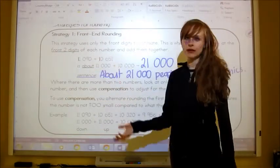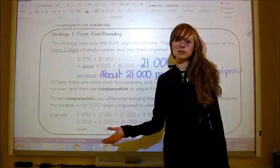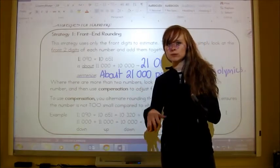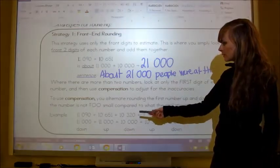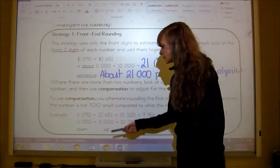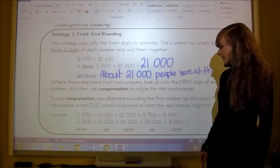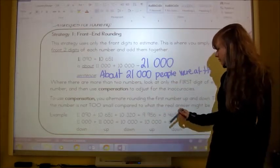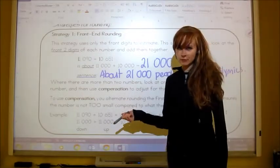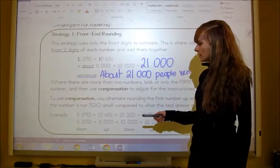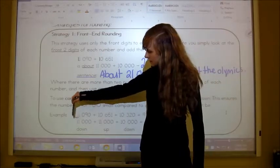We're getting rid of almost 700 people by rounding this. If we add this 90 in, we're getting rid of 700 people, which is quite a few, right? So in compensation, that is trying to take into account that some numbers will be bigger and some will be smaller. If I had 11,090 plus 10,651 plus 10,320 plus 9,956 plus 8,465, and I was going to use compensation front-end rounding, then I would alternate. So I would round down, then up, then down, then up.